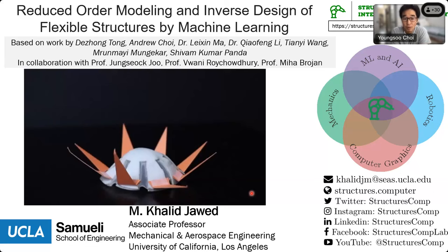He also served as a postdoctoral researcher at Carnegie Mellon University. He received the NSF Career Award in 2021, the outstanding teaching award from UCLA in 2019, the outstanding teaching assistant award from MIT in 2015, and the GSNP best speaker award at the American Physics Society March meeting in 2014. Today, Khalid will present on reduced order modeling and inverse design of flexible structures by machine learning. Please enjoy and expect a wonderful talk. Now, without further ado, let me pass it to Khalid with one random question as usual.